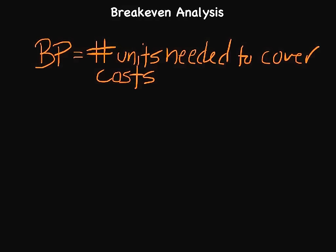Let me show you what the equation is for a break-even point. The break-even point is simply your fixed costs divided by something. Fixed costs do not vary over time within a certain relevant range. These often include things like plants, property, equipment, advertising, insurance, and taxes. They're fixed because they don't vary based upon the number of products that you sell.